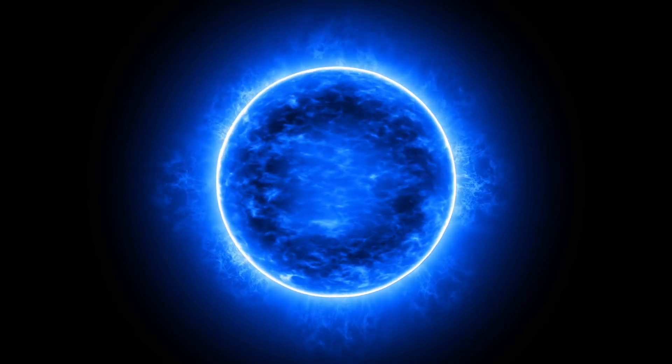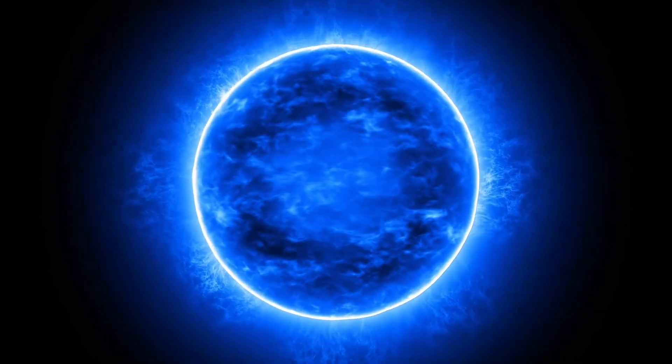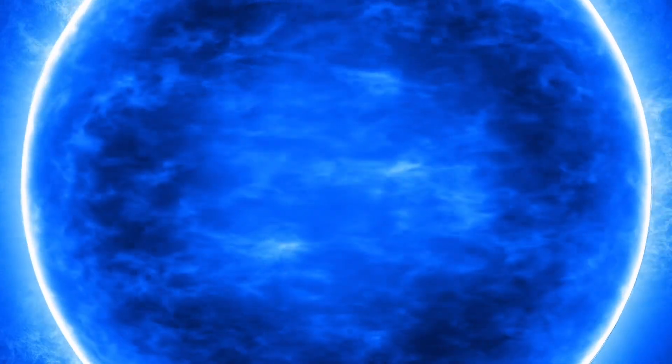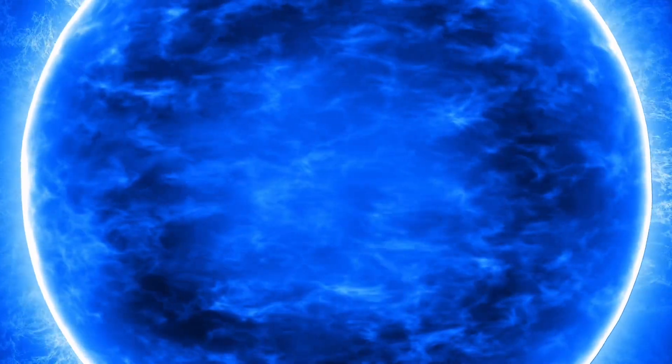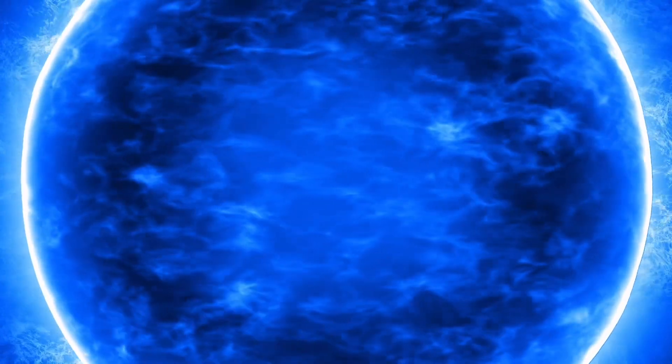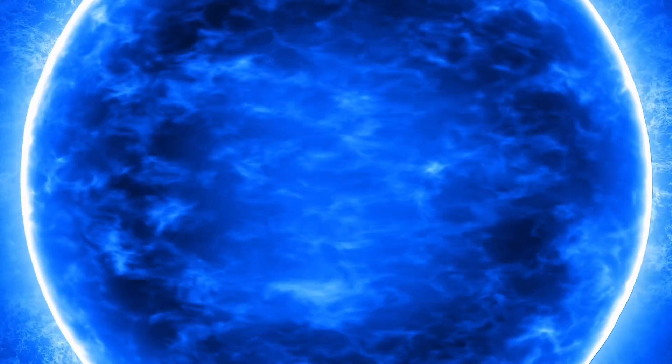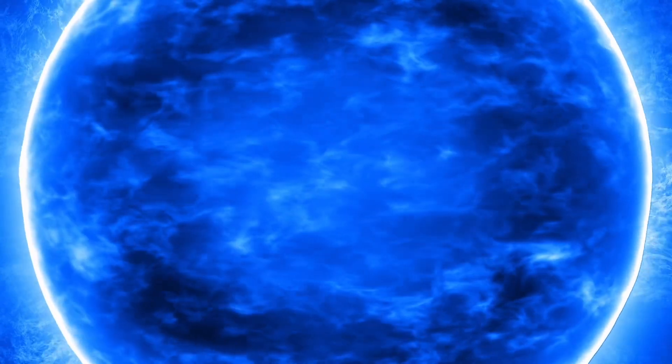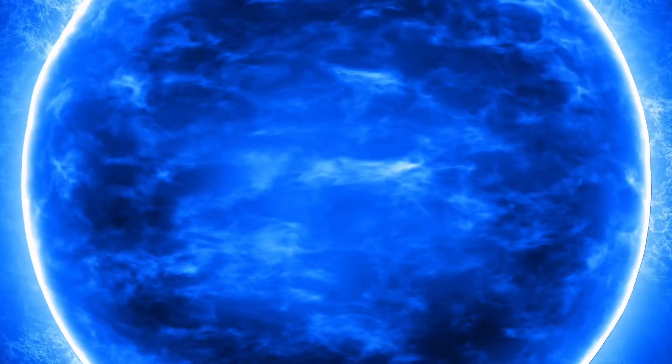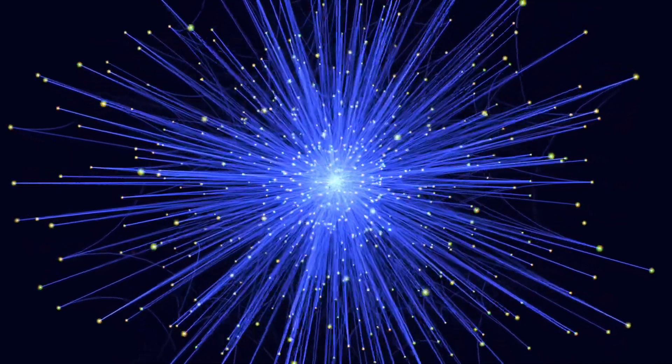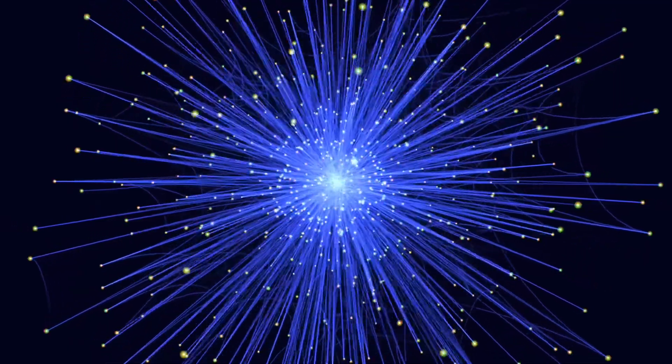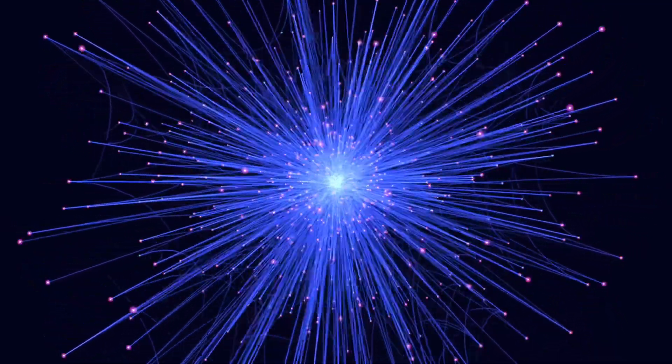Blue supergiants. Blue supergiants are massive stars. They are much larger and hotter than the sun. They are among the most luminous stars in the universe. Blue supergiants have a high surface temperature which gives them a blue color. They have a short lifespan compared to smaller stars, typically only a few million years. Blue supergiants end their lives in a dramatic supernova explosion, leaving behind a neutron star or a black hole.